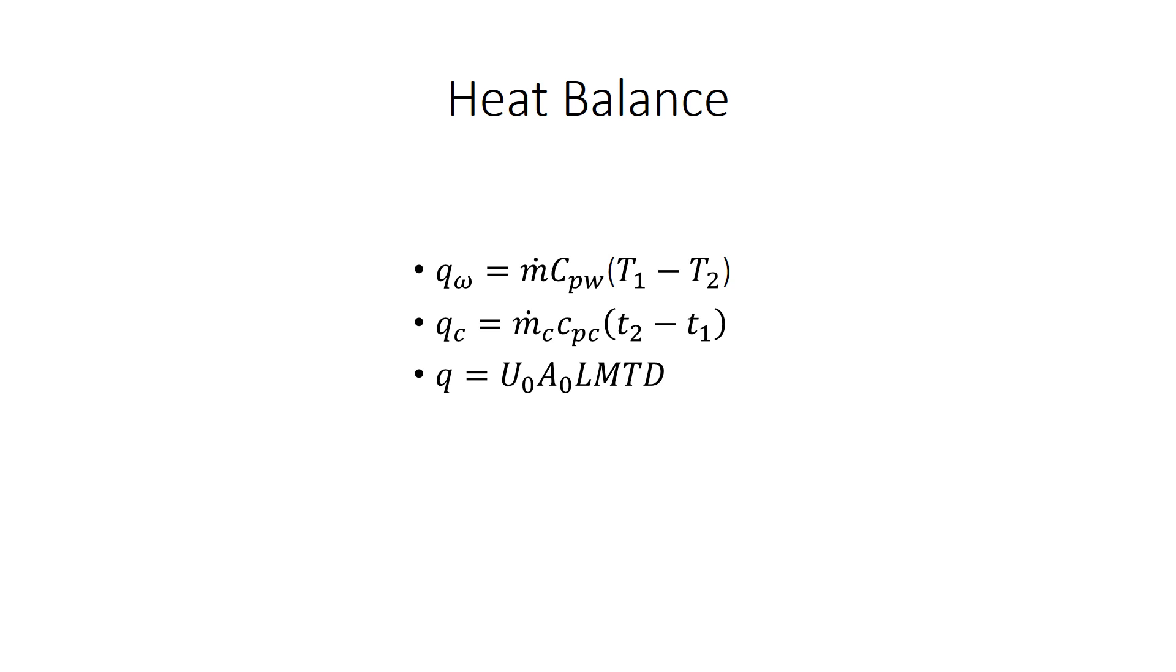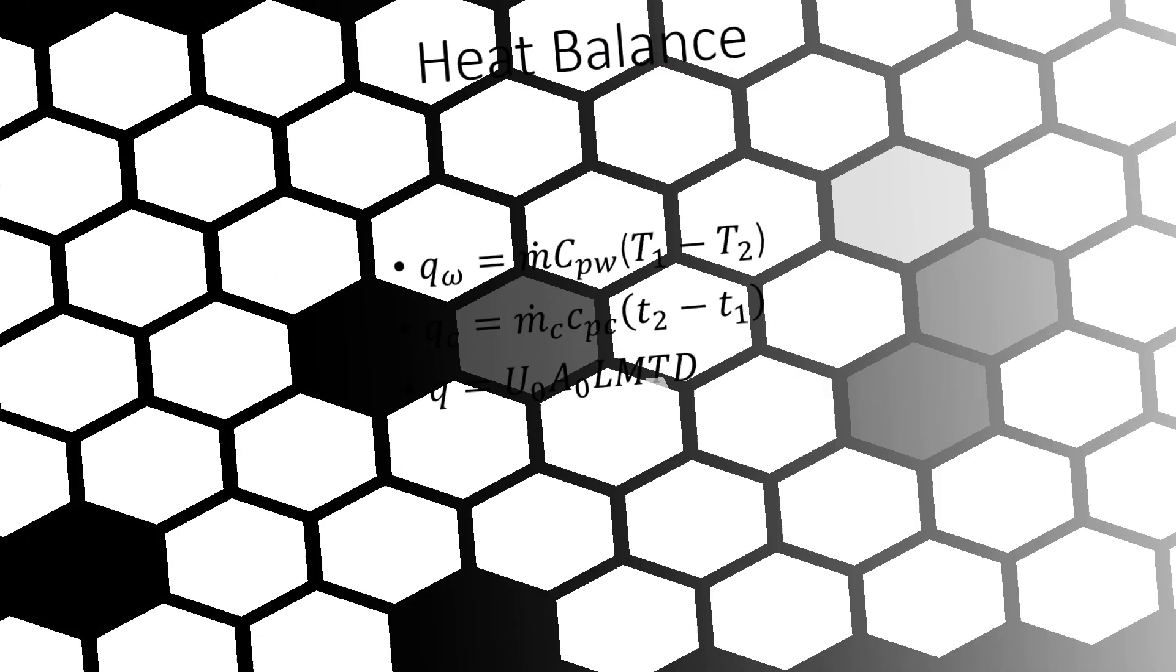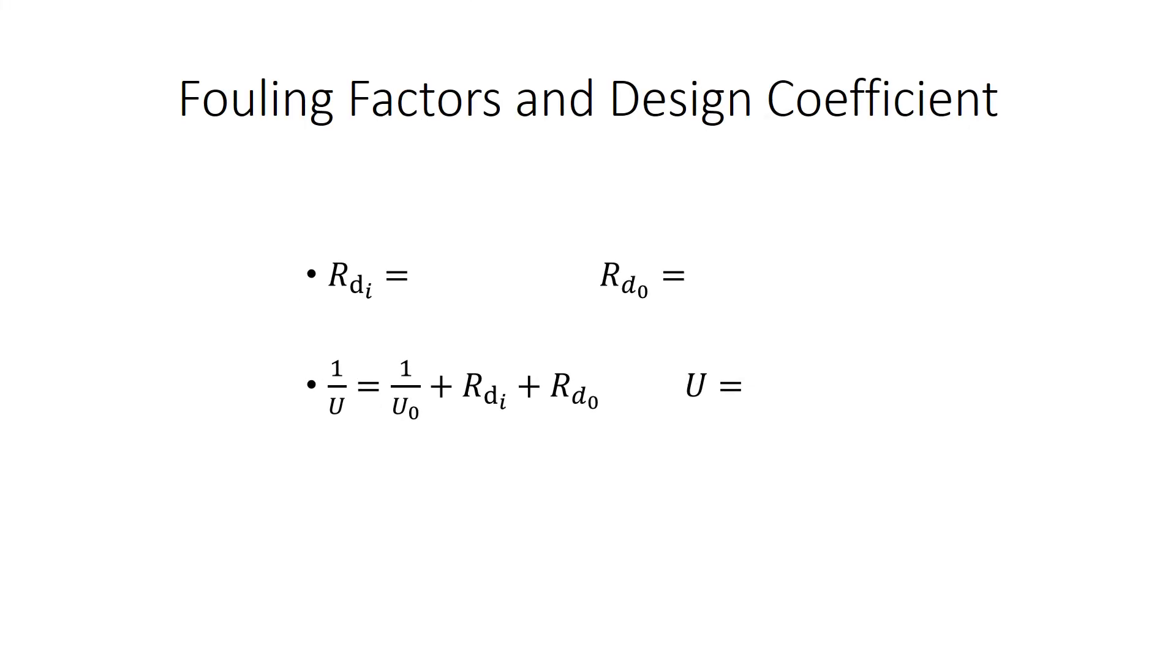The last equation is the overall, which involves the resistance, the area, and the log mean temperature. Next, we will discuss the fouling factor and the design coefficient. The fouling factor is the scale or dust deposited on the surface of the tubes. This reduces the rate of heat transfer between the fluids by increasing the resistance to the heat flow through the inner tube wall. The R subscript DI is the inside diameter and the R subscript DO is the outside diameter. 1 divided by U with a subscript O is the exchange coefficient. If you add them all together, you get the design coefficient of 1 divided by U.